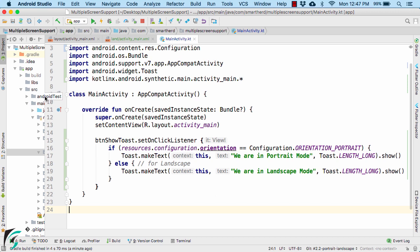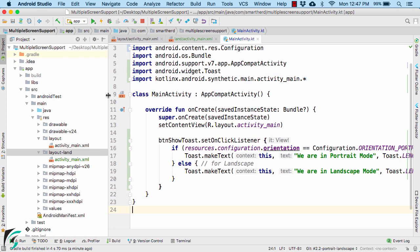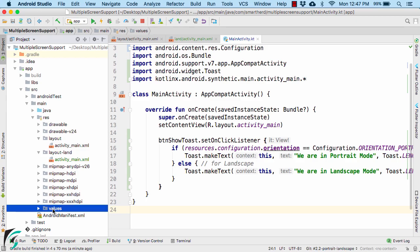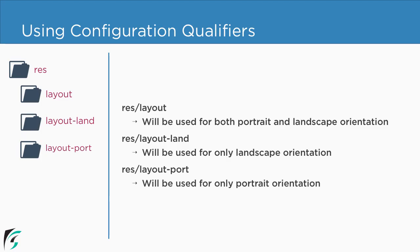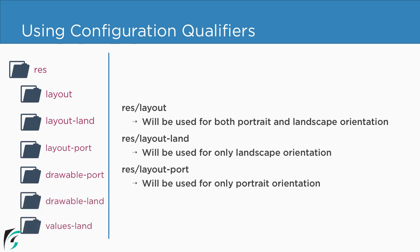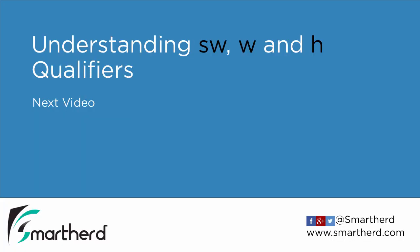Similar to layouts, you can also customize resources for the drawable and values folders. For that, create separate folders such as drawable-port, drawable-land, and even values-land or values-port, and place your images or string files accordingly. That was all for this video. In the next video we will see what SW, W, and H configuration qualifiers are. See you there.